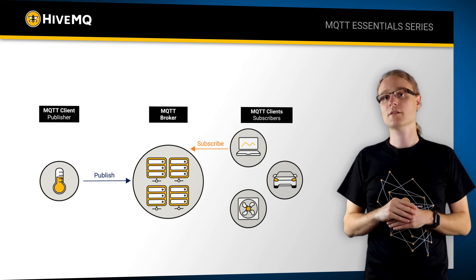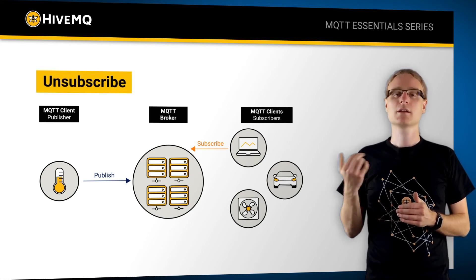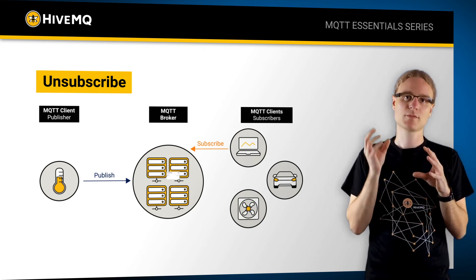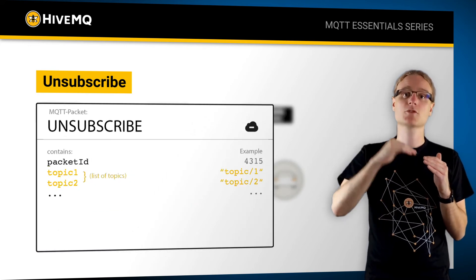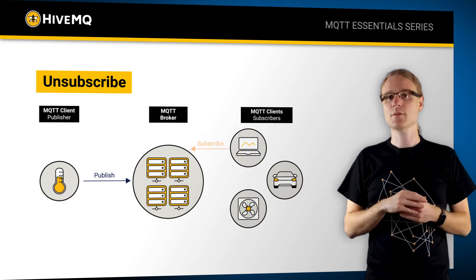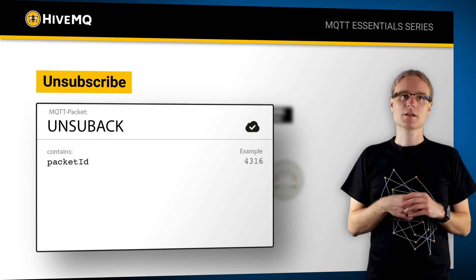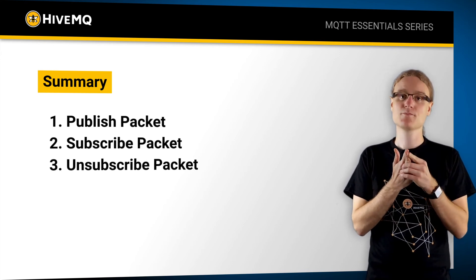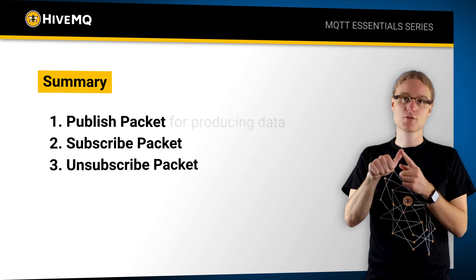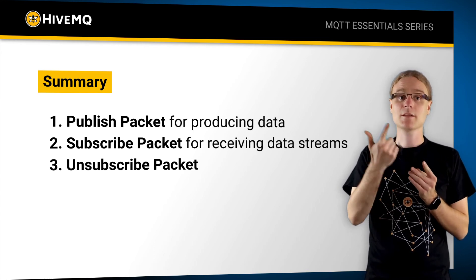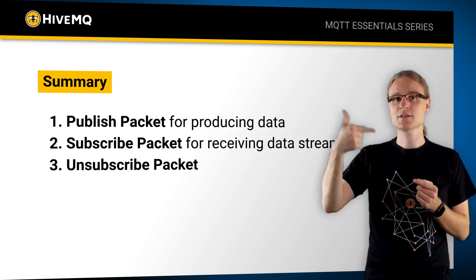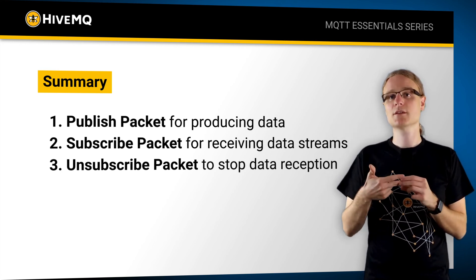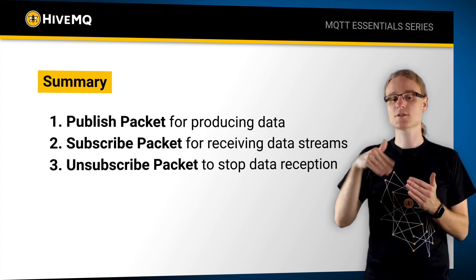The last important packet is the so-called unsubscribe packet. The unsubscribe packet is used if you don't want to receive a data stream anymore from your broker — you send a packet with multiple topics which you want to unsubscribe from, and then the broker acknowledges with an UNSUBACK. To summarize, we have three important packet flows: the publish packet, the subscribe packet, and the unsubscribe packet. Publishing is for producing data, subscribing is for receiving data streams — you receive the message stream for those topics as soon as the broker sends you a SUBACK — and with unsubscribe, if you don't want to participate in the message stream anymore, you can unsubscribe and the broker stops sending you messages.